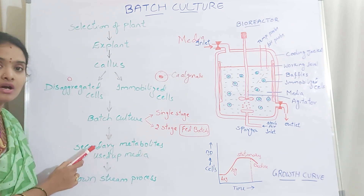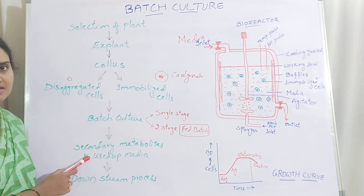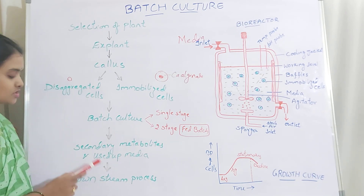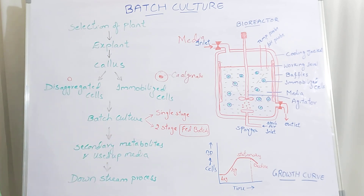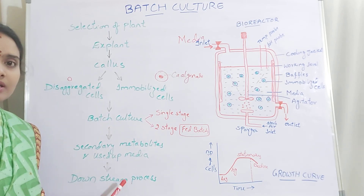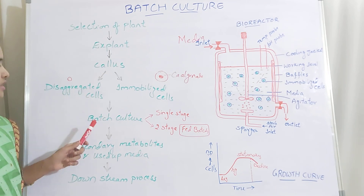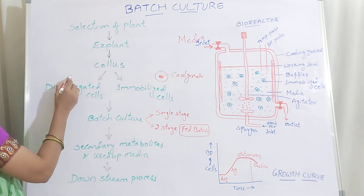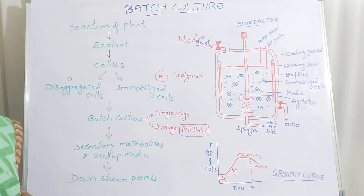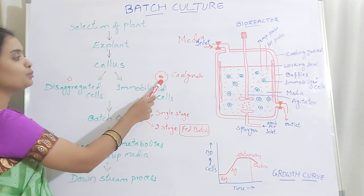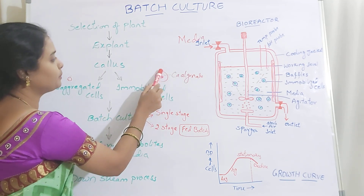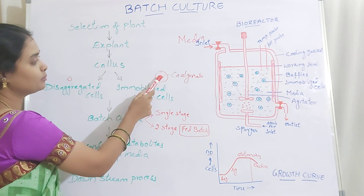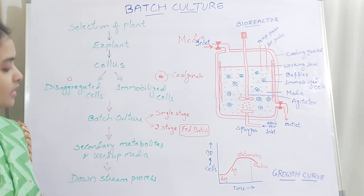The media is referred to as used-up because all the nutrients present in it have been consumed by the cells. After that, you go for the downstream process where you separate the cells, separate the secondary metabolites, and send them for purification. If you are using disaggregated cells in batch culture, these cells may get damaged — the cell wall may get damaged and they may not be used a second time. Whereas if you are using immobilized cells, as they are protected by the gelatinous substance, the gel beads give protection to the explant, and these immobilized cells can be reused in another batch.